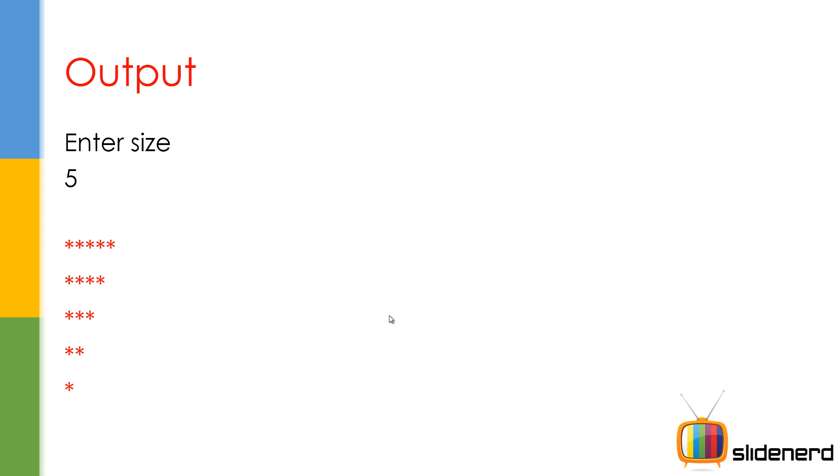In the output, you enter the size and the user enters 5, and this is what happens. Let's go ahead and see how this works.